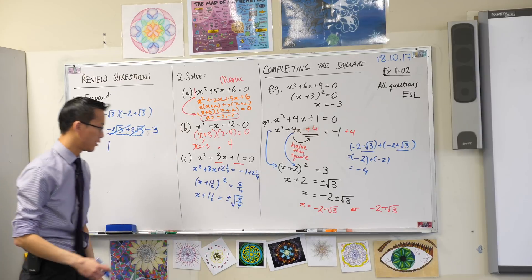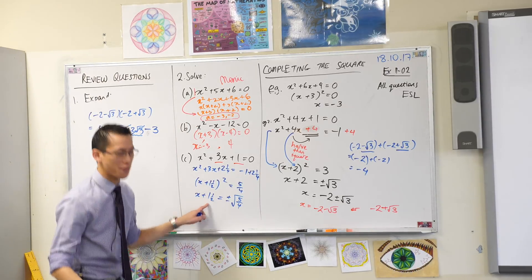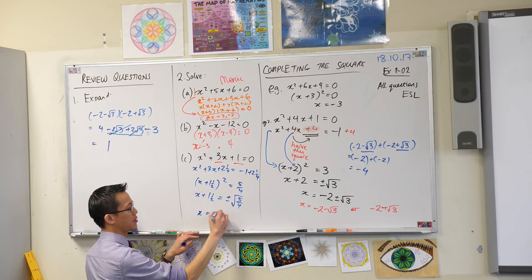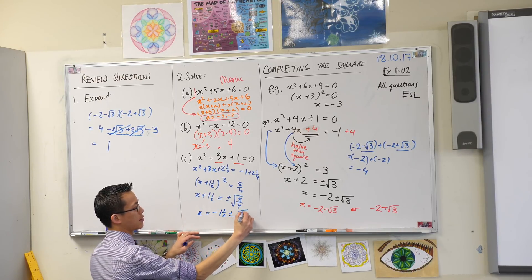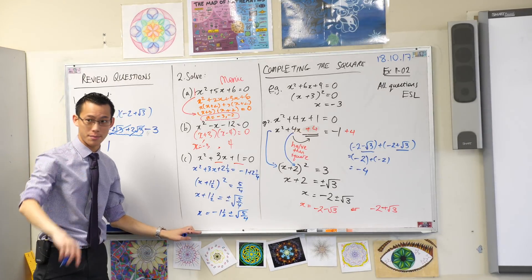I'm almost there now. Have a look. What am I going to do to both sides? I'm going to subtract that from both sides. That gives me this. And those are your answers. Two of them.